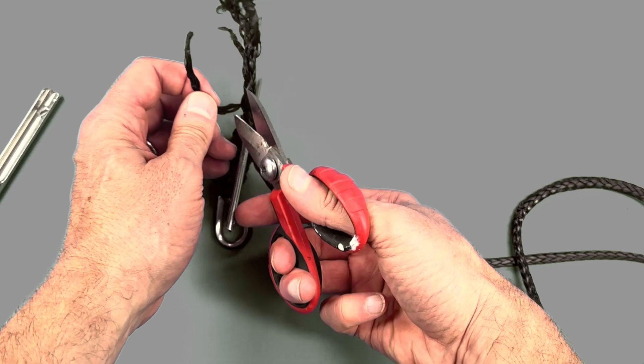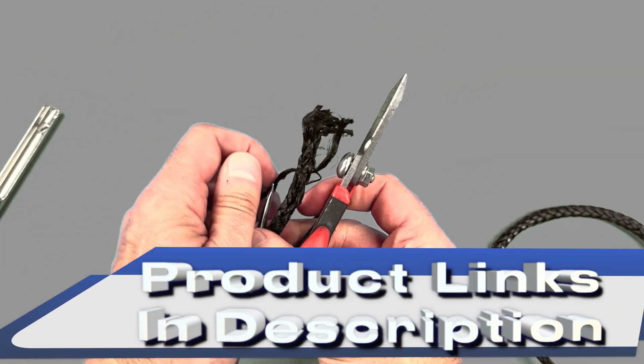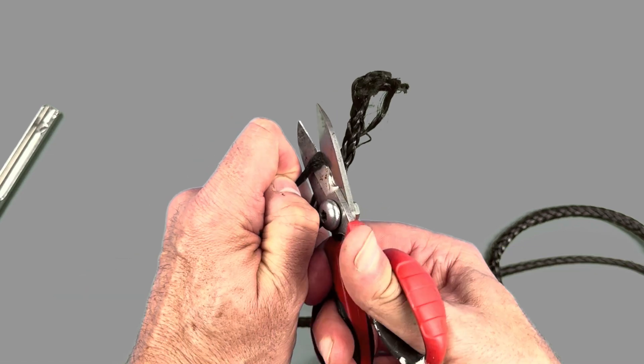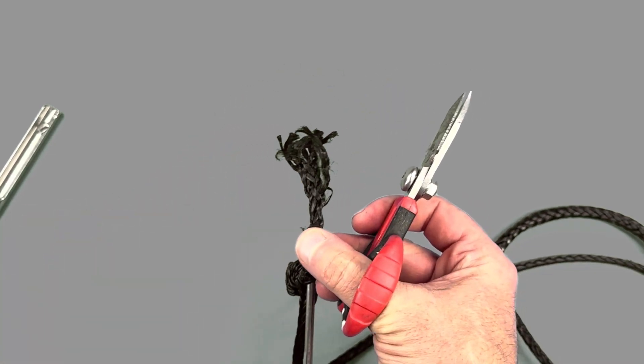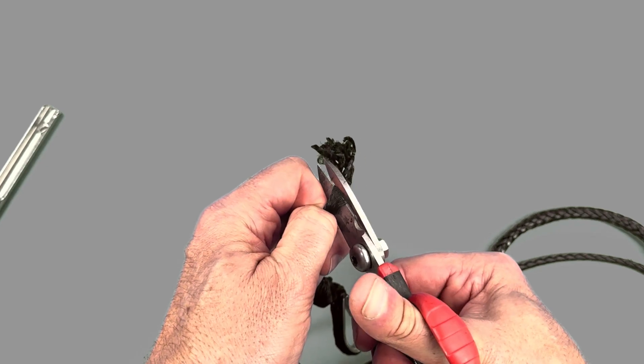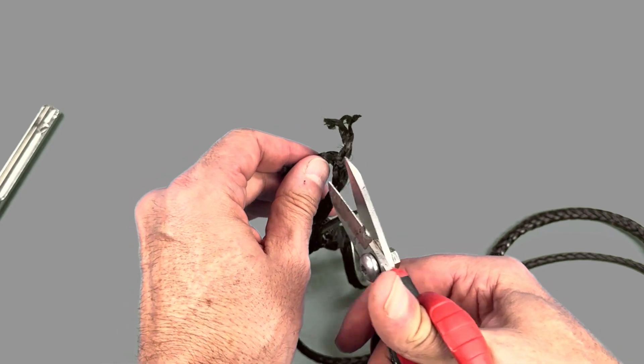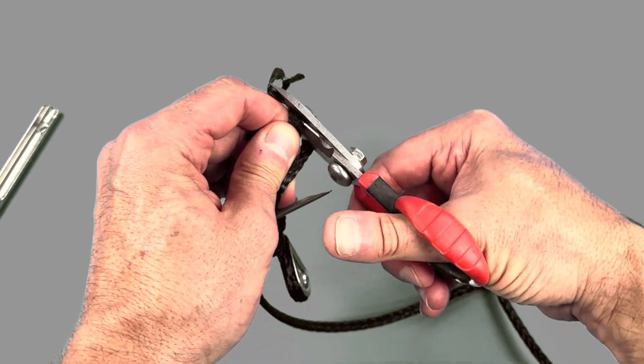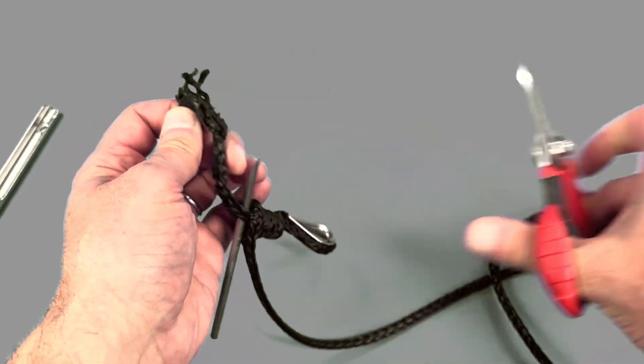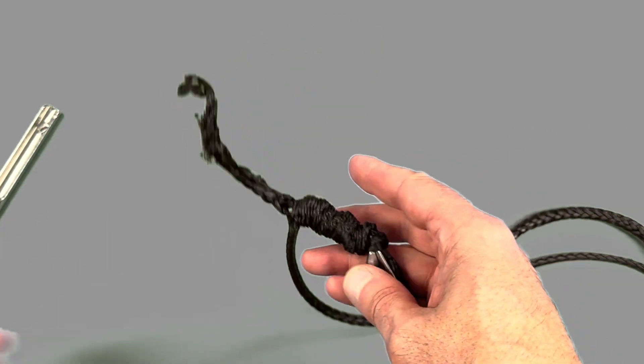Once again, if you need any of the equipment used in today's videos, please use the product links in the description below. It really helps small channels like ours if you do this. With all the threads cut off and then a nice 45 degree cut at the end, it's a simple matter of removing the smallest fid, the piece to hold it in place, and sliding it down and burying the working end in the standing end.